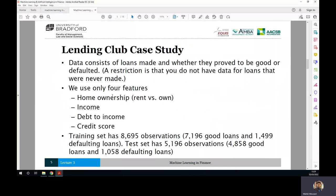Okay, so let's have a real case study. Lending Club as a company which actually lend to different customers. Data consists of loans made and whether they prove to be good or default. So, restriction is that you don't have data for loans that were never made, so this is one of the restrictions of the data set. It means that our database is kind of biased.